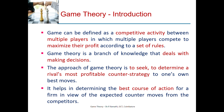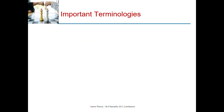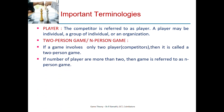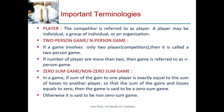Next we will get to know about important terminologies used in game theory. A player is what competitors are referred to as. A player may be an individual, a group of individuals, or an organization. If a game involves only two competitors it is called a two-person game; if there are more than two players it is referred to as an n-person game. In a zero-sum game, the sum of gains to one player is exactly equal to the sum of losses to another player — that is, gains and losses sum to zero. Otherwise it is a non-zero-sum game.